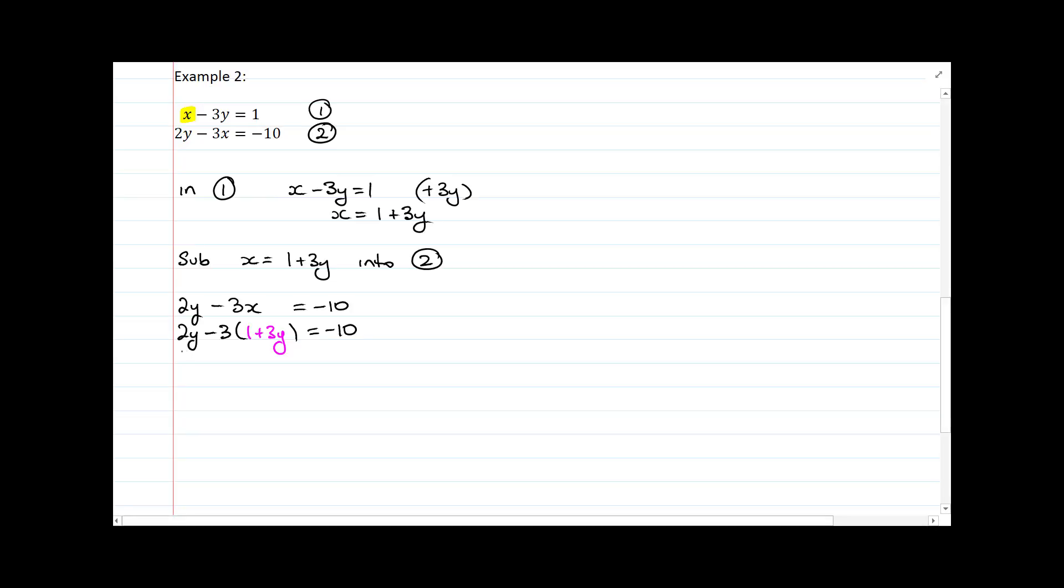And then I'm going to expand and solve. 2y is the same. Negative 3 times 1 is negative 3, and negative 3 times 3y is negative 9y, and that's now equal to negative 10. And so of course this gives me, I add 3 and I'll get negative 7, and 2y minus 9y gives me negative 7y. And dividing by negative 7, I get that y is equal to 1. And there's my first unknown variable solved.